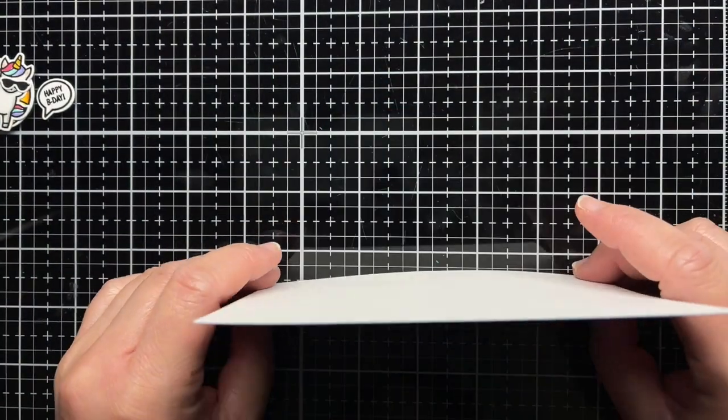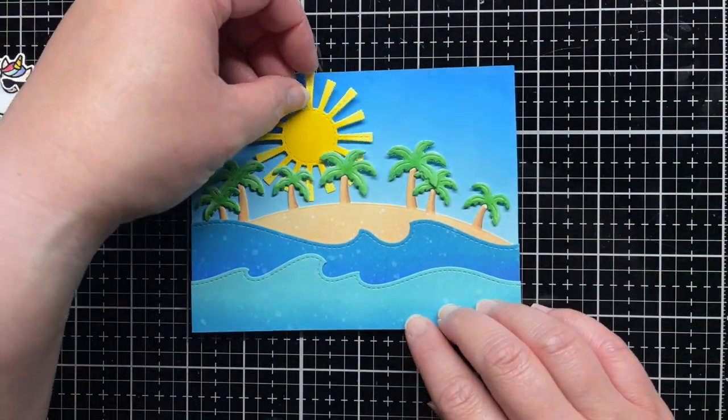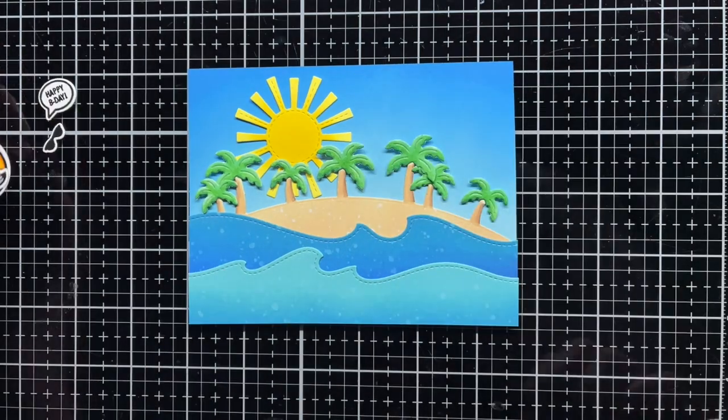Now it's time to assemble my card. I adhere all the layers together with ATG adhesive and then adhere them to a top folding card base.